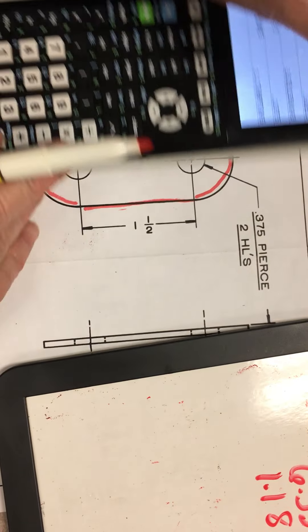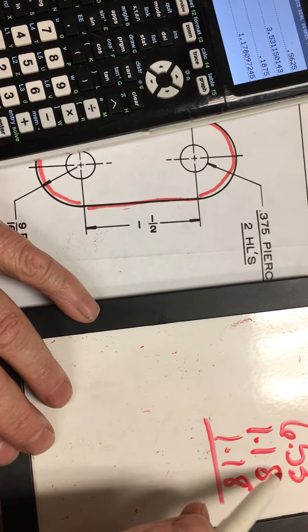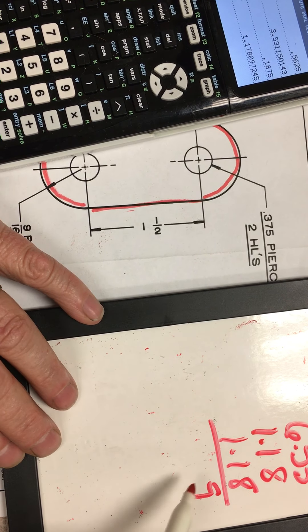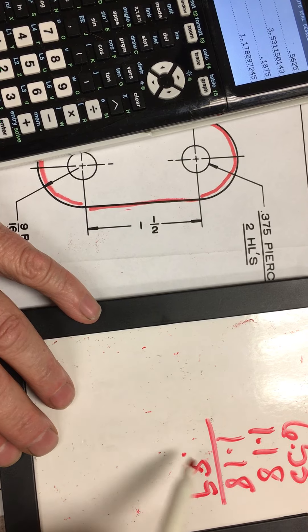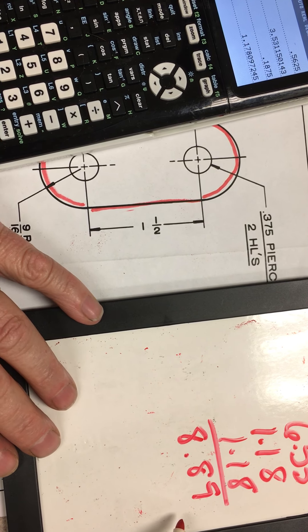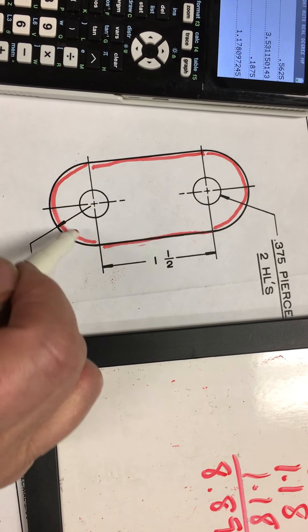2 times pi times 0.1875 and I get 1.178. We will say 1.18. There are 2 of those. I need to add that again. That gives me 8.89 inches. That is the perimeter of what is going to be cut.